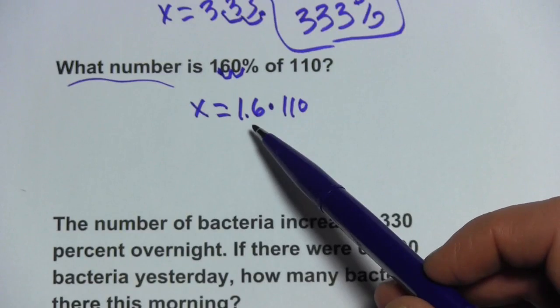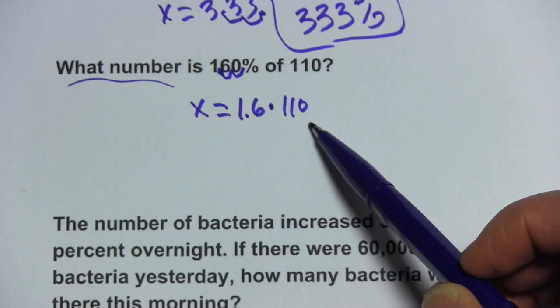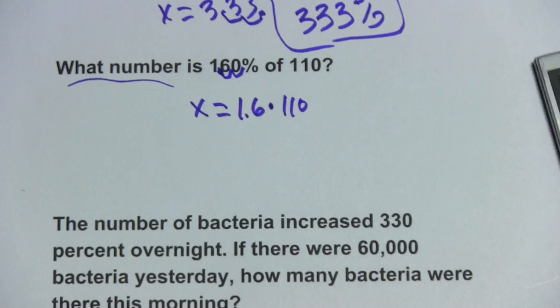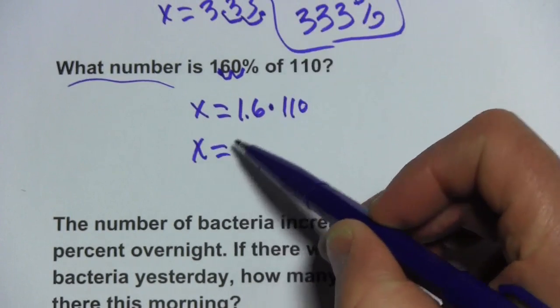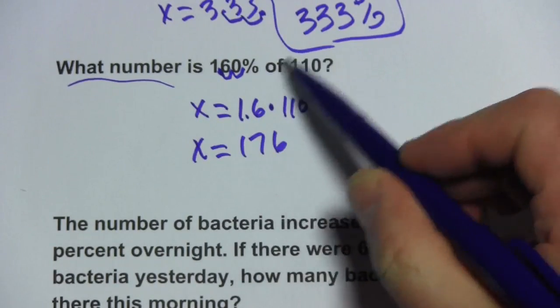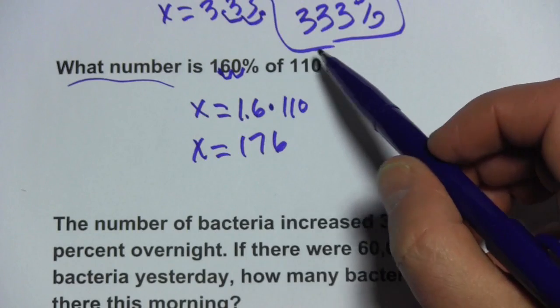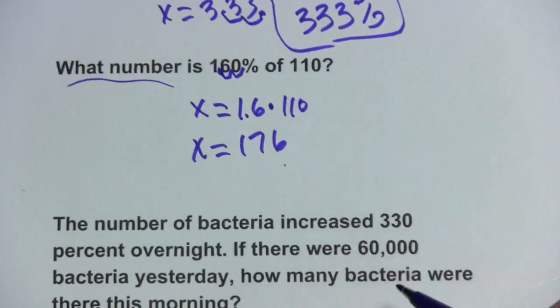So this problem really comes down to just multiplying 1.6 times 110. So let's try that and that's 176. We were looking for a number that was somewhere around one and a half or a little bit bigger times 110. 176 looks like it fits the bill perfectly.